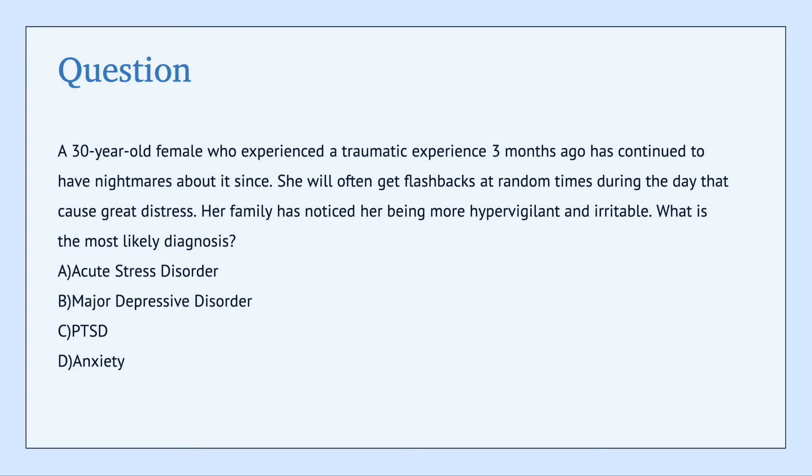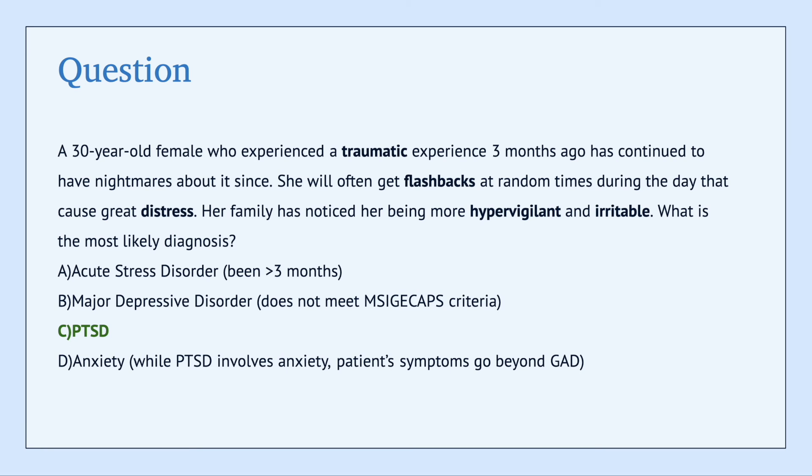The answer here is PTSD. In this question, we have a patient who experienced a traumatic experience — she's getting flashbacks, she's in great distress, and she's becoming hypervigilant and irritable. Let's walk through why each answer is wrong. This cannot be acute stress disorder because, remember, for acute stress disorder, symptoms cannot persist longer than a month. It's not MDD because we're not meeting the SIG E CAPS criteria. And it's not anxiety because, while PTSD can involve anxiety, this patient exhibits many hallmarks of PTSD beyond just anxiety, including hypervigilance and flashbacks.